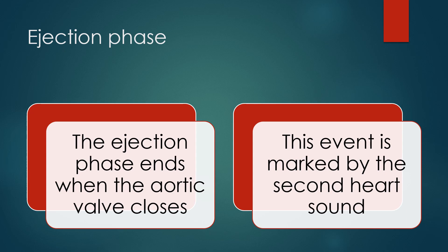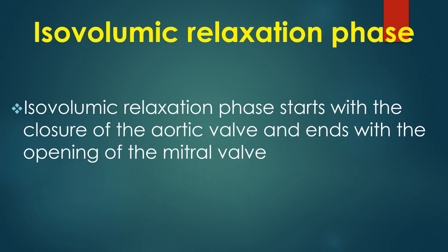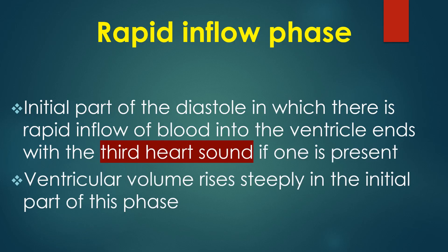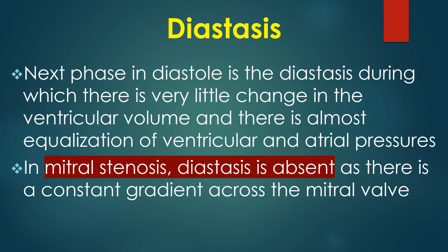Isovolumic relaxation phase starts with the closure of the aortic valve and ends with the opening of the mitral valve. The rapid inflow phase is the initial part of diastole in which there is rapid inflow of blood into the ventricle, ending with S3 if one is present. Next is diastasis, during which there is very little change in ventricular volume and almost equalization of ventricular and atrial pressures. In mitral stenosis, diastasis is absent as there is a constant gradient across the mitral valve.